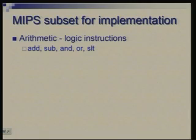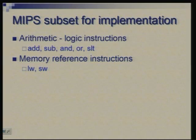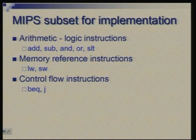Starting with what instructions we want to begin with — these are the instructions we learnt right in the beginning. We need to be very specific because we need to build a circuit which will actually do those particular instructions. So we will take add, subtract, OR, and SLT — two arithmetic instructions, two logical instructions and one comparison instruction. Then we will take the two memory reference instructions load word and store word, and two control flow instructions branch if equal and jump.